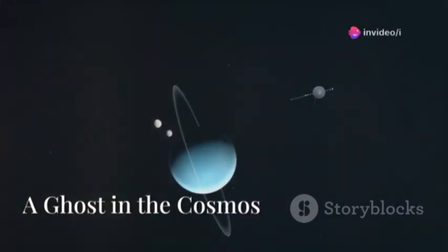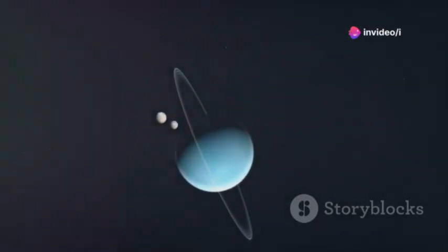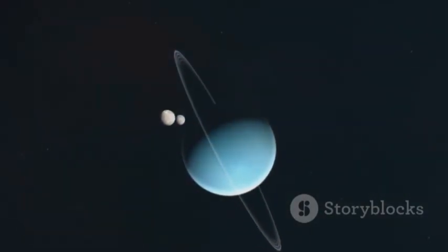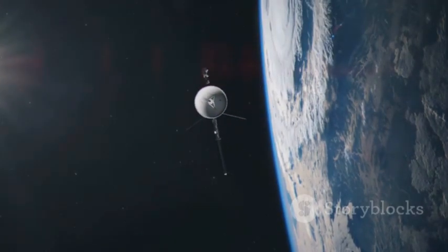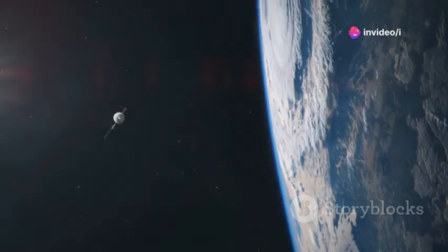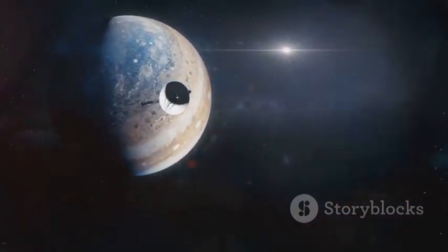It drifts through the endless silent dark, a tiny man-made ghost far from the warm light of its home star. This is Voyager 2, launched in 1977. It was a marvel of human ingenuity sent to explore the outer giants of our solar system and then keep going.